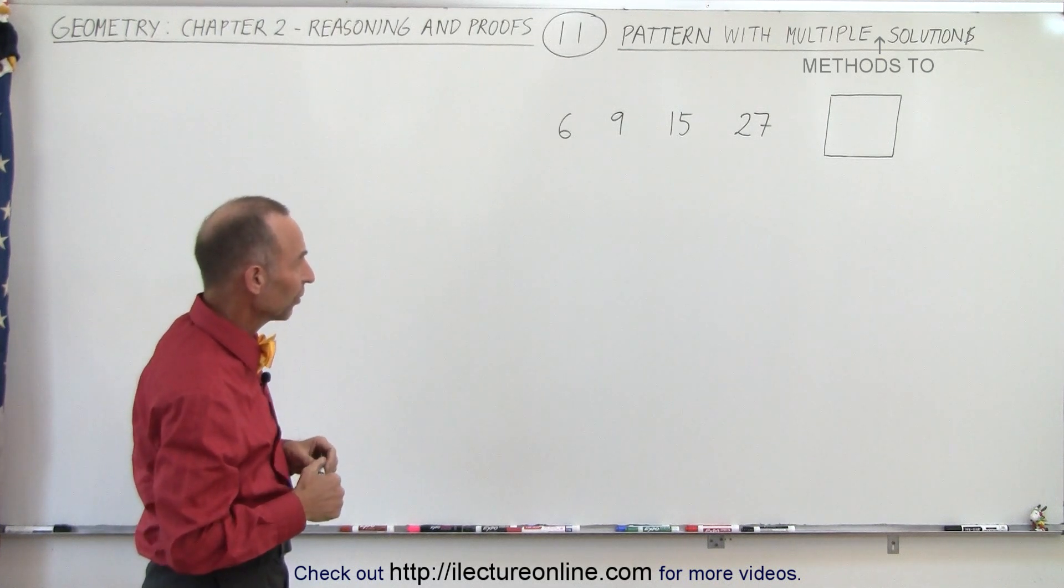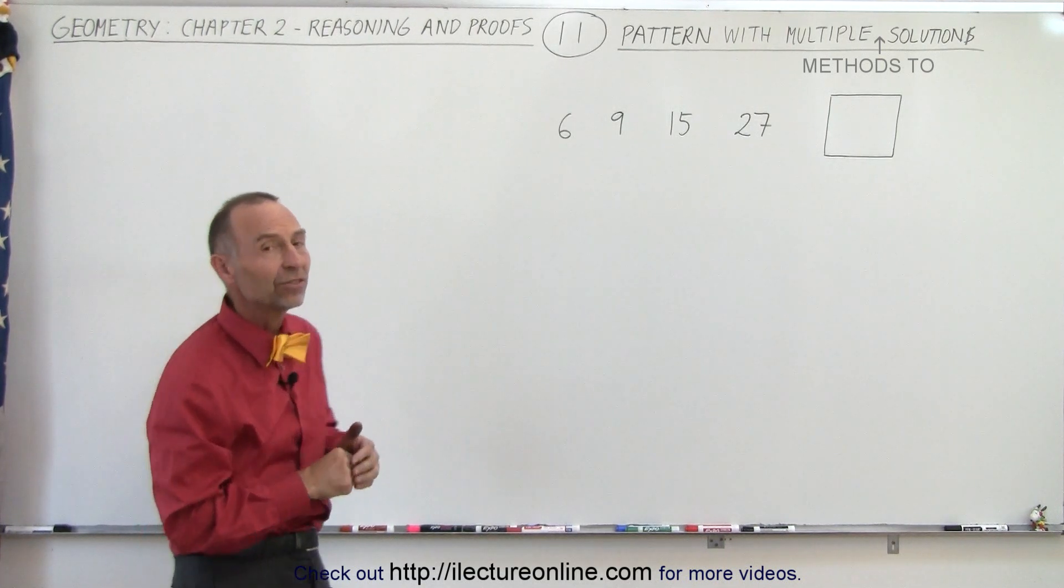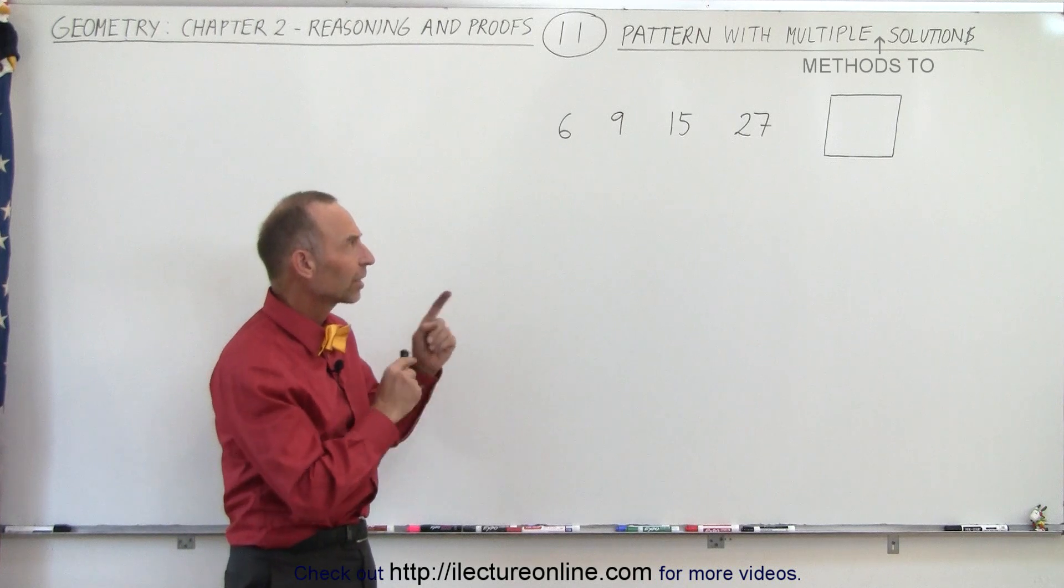So let's take a look at these numbers: 6, 9, 15, and 27. What do you think the next number should be?